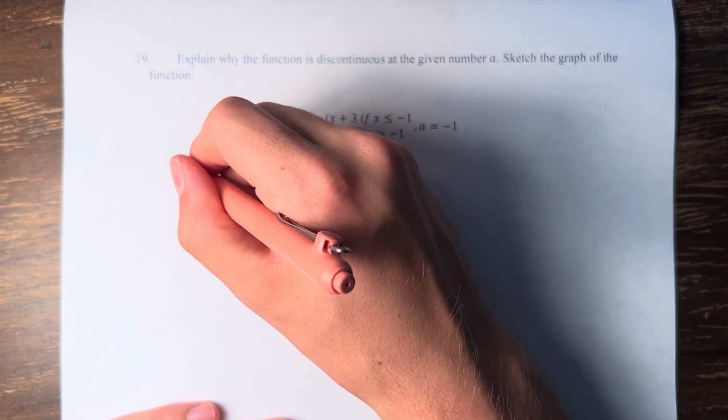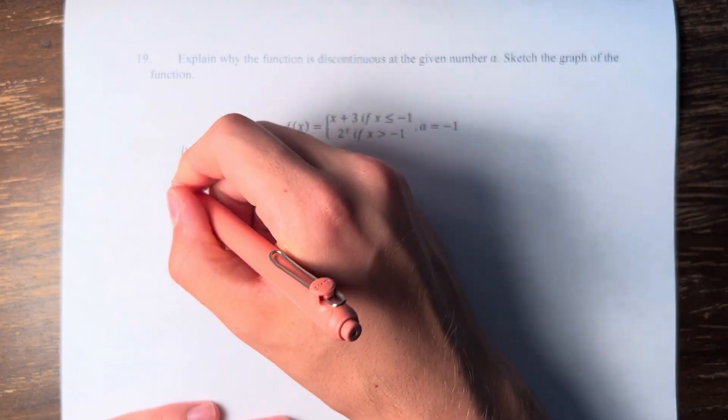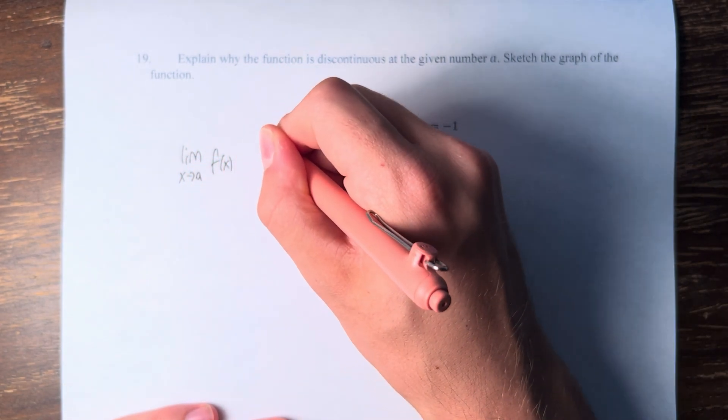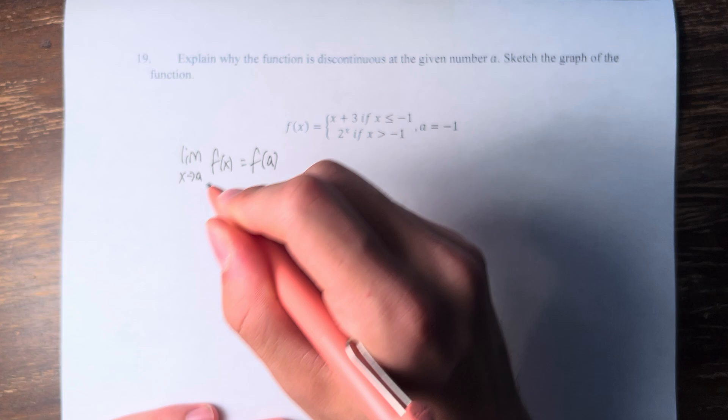A function is continuous at point a if the limit as x approaches a of the function is equal to the value of the function at that point, f of a.